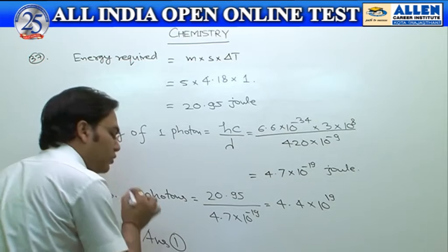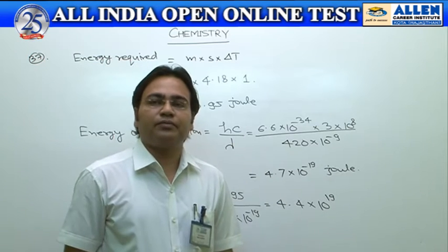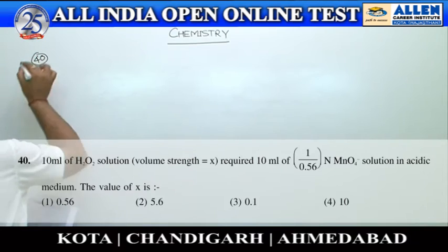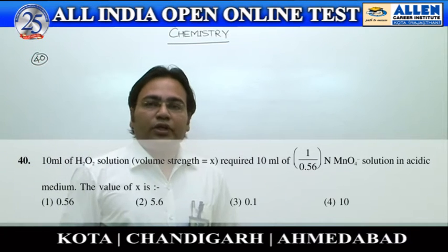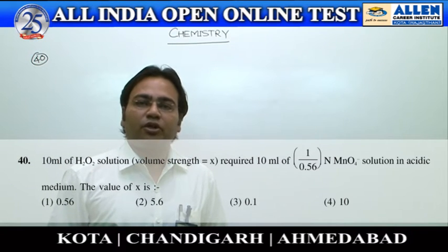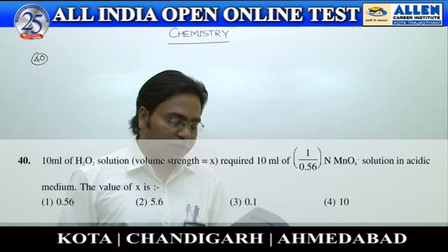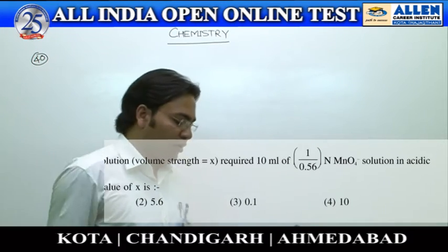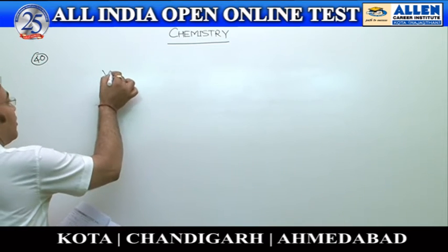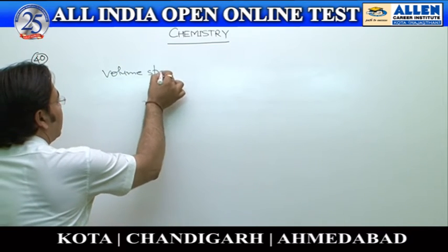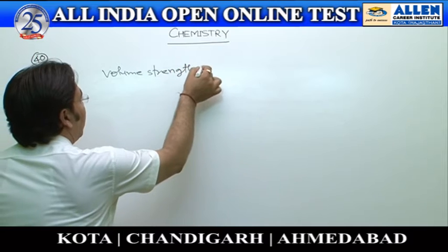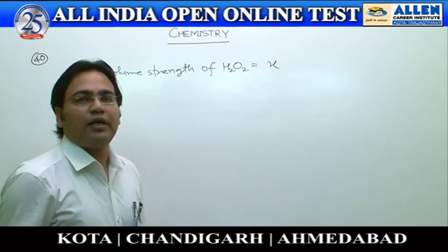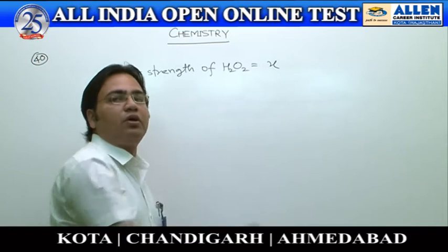Now we discuss question number 40, which is based on redox titration. In this question, an H₂O₂ solution is titrated with permanganate ion. The volume strength of H₂O₂ is given as X, and we have to find the value of X.